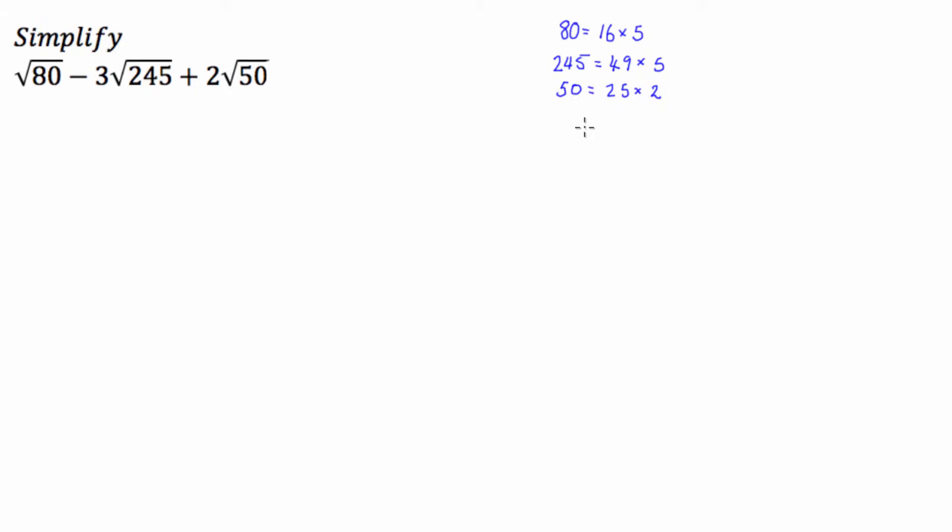Okay, so now that we've got our factors over here, what we can do is rewrite this using the factors. Now, we're going to use a surd law which states that the square root of AB is equal to the square root of A times the square root of B. So we're going to use this law when we're breaking up the numbers underneath the surds.